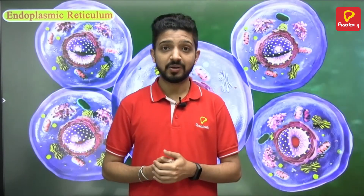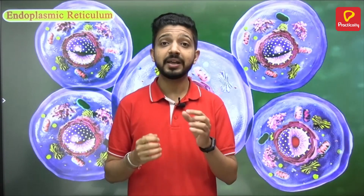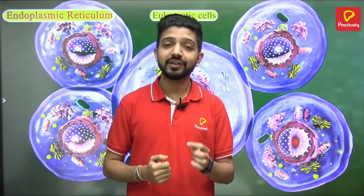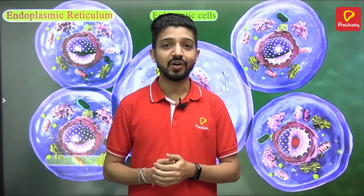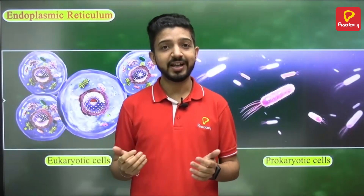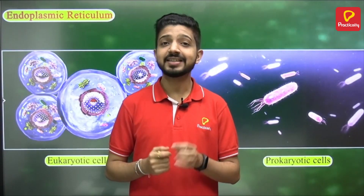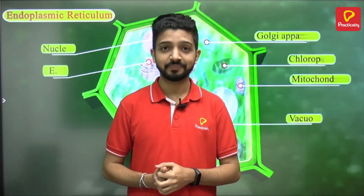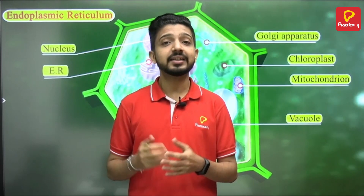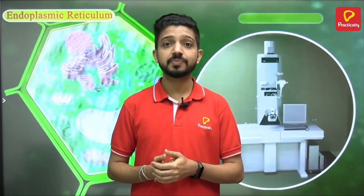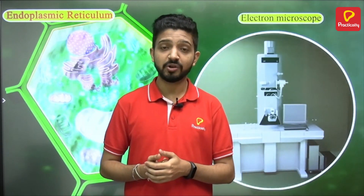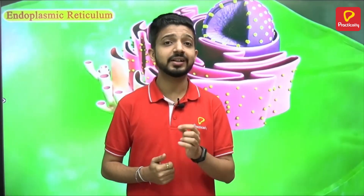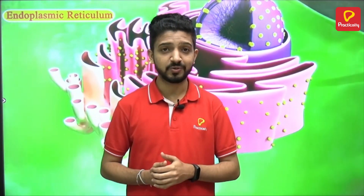These membrane bound cell organelles make eukaryotic cells different from prokaryotic cells, since prokaryotic cells don't have membrane bound organelles. These various organelles perform very important functions which can only be observed under an electron microscope.